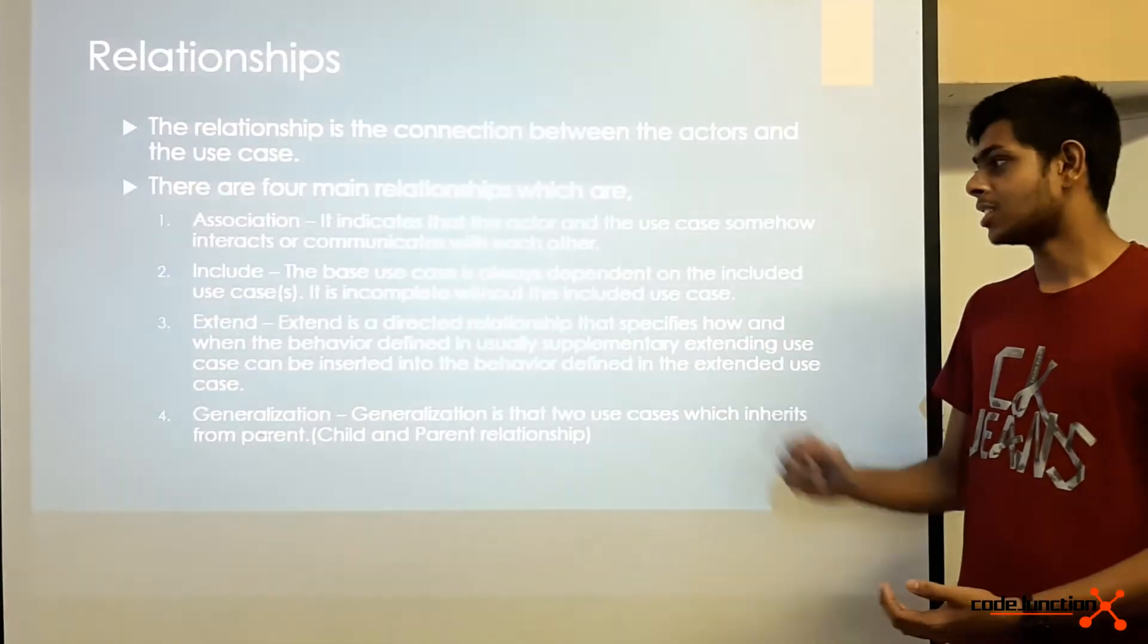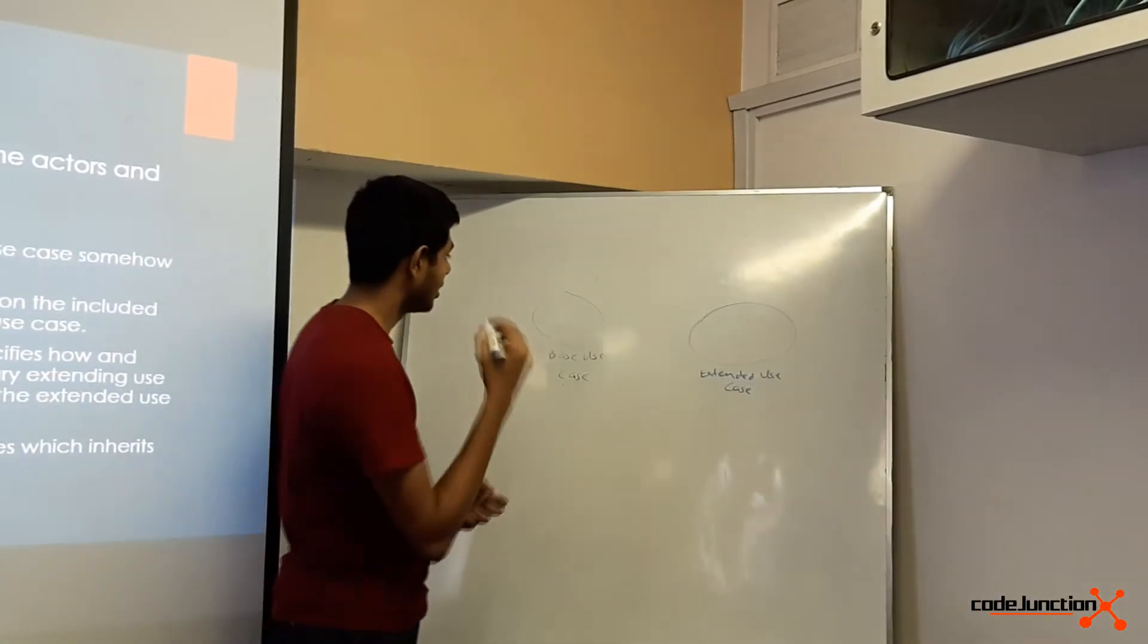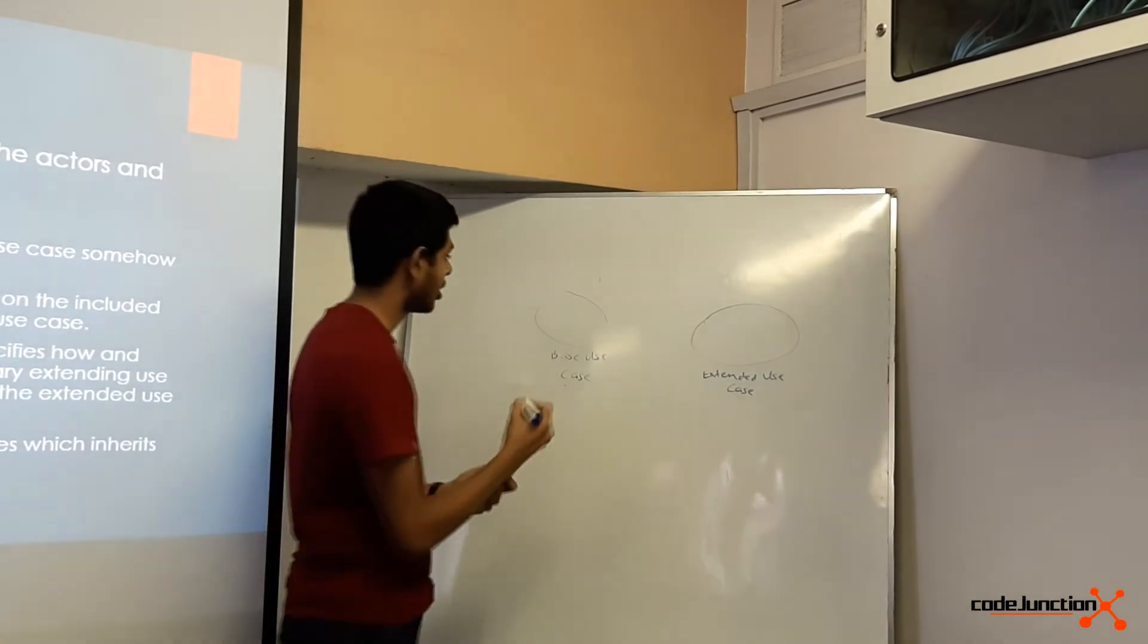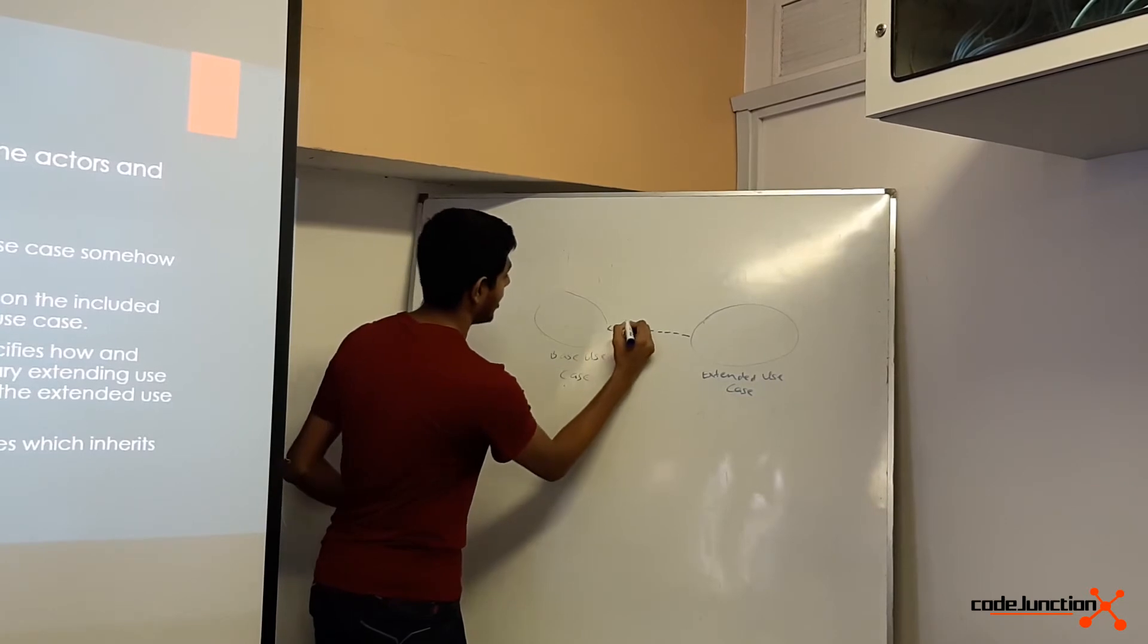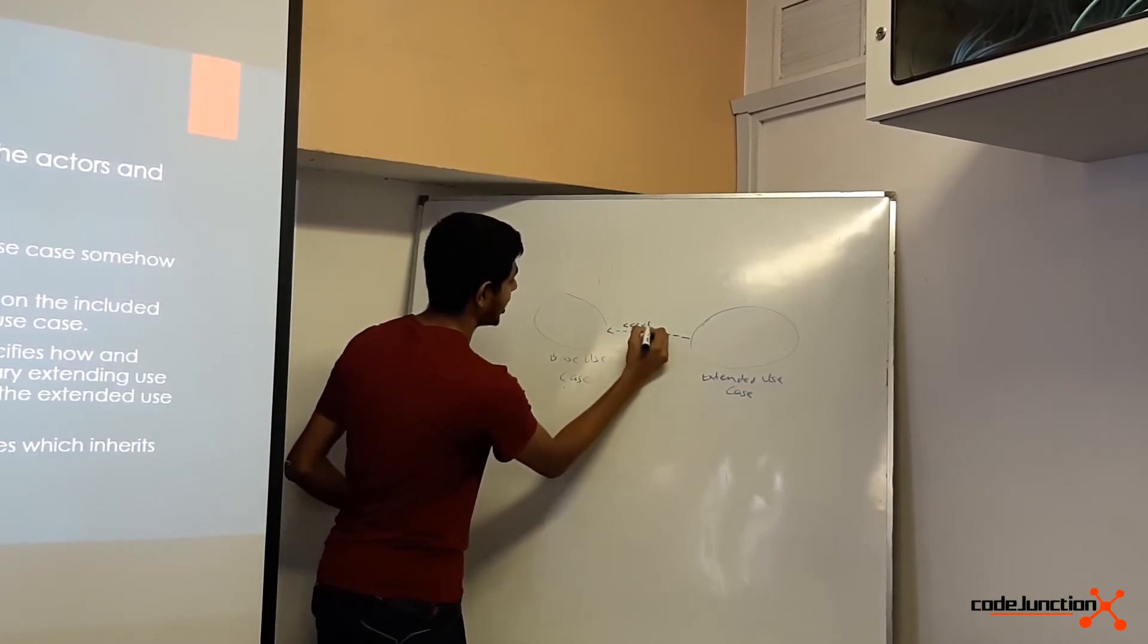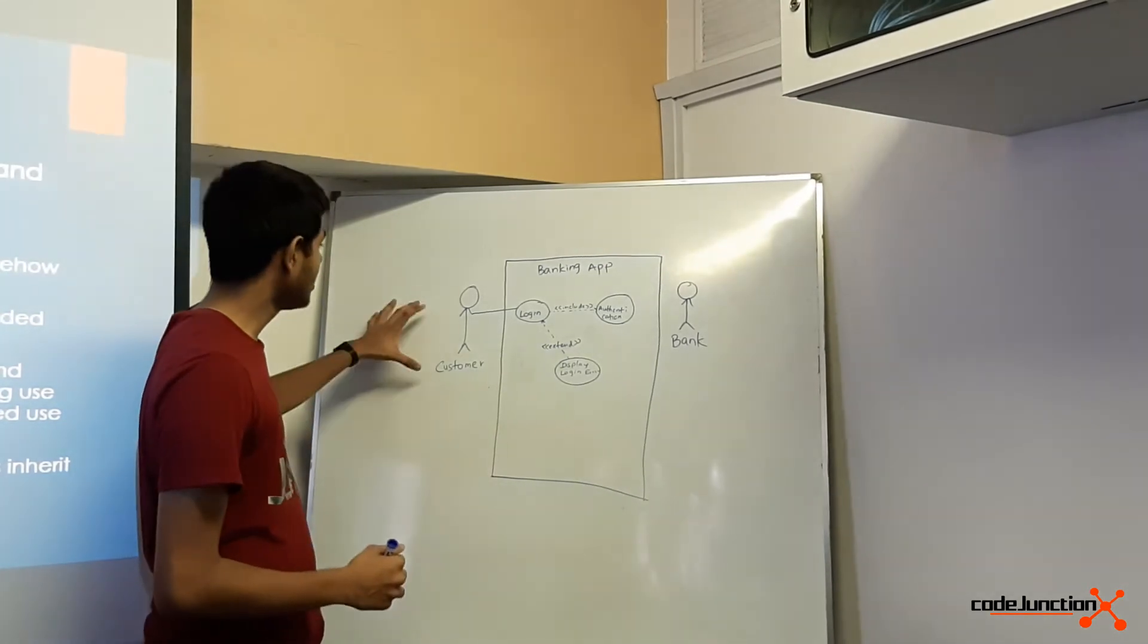Extended relationship basically defines optional behavior. The extended relationship is represented by drawing a dash sign from the extended use case to the base use case and writing 'extend' in stereotype. In this example, when the customer logs into the system, it may display a login error.